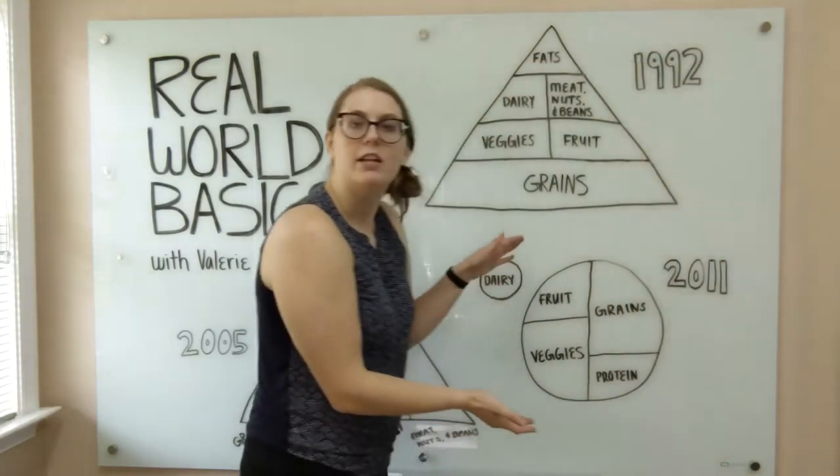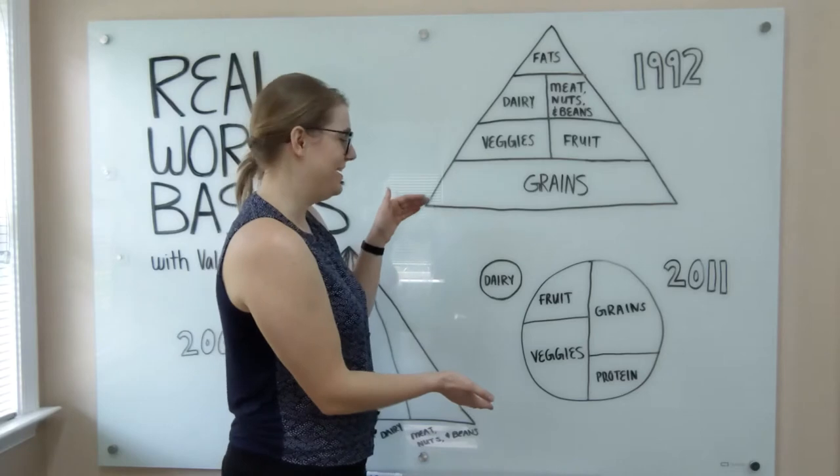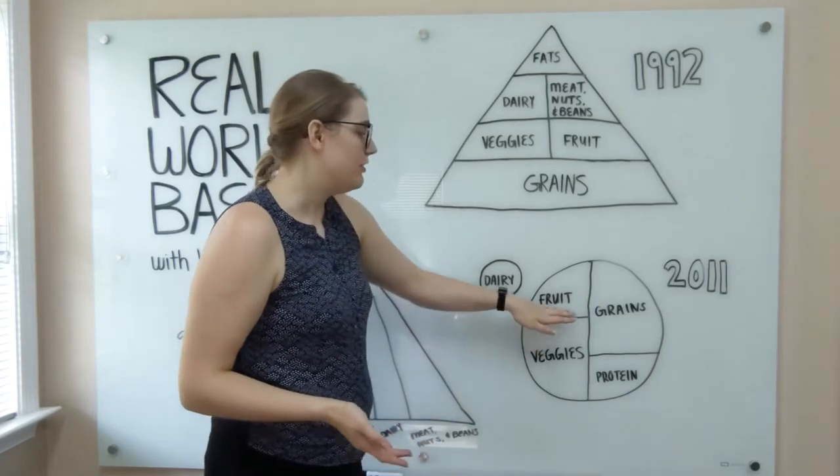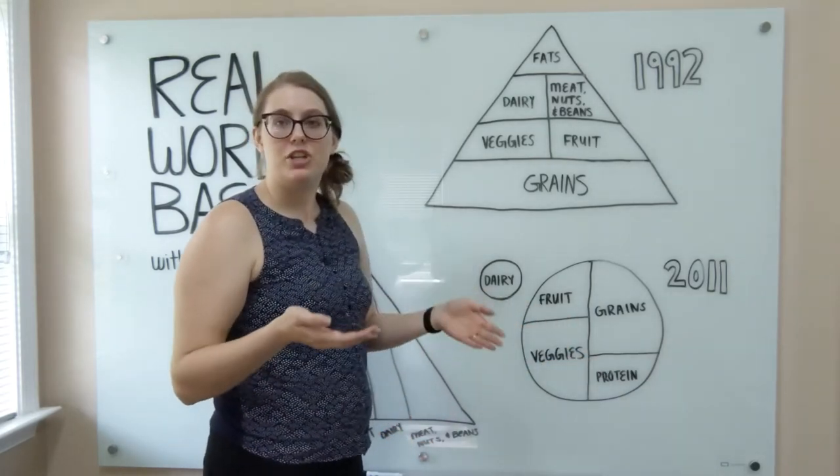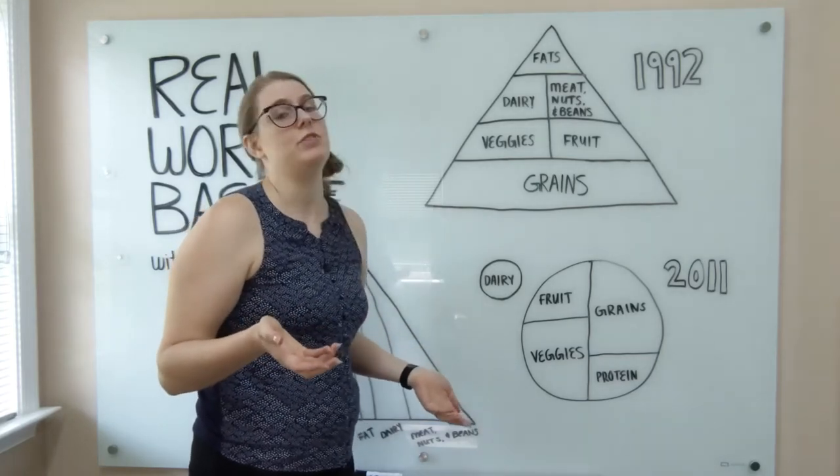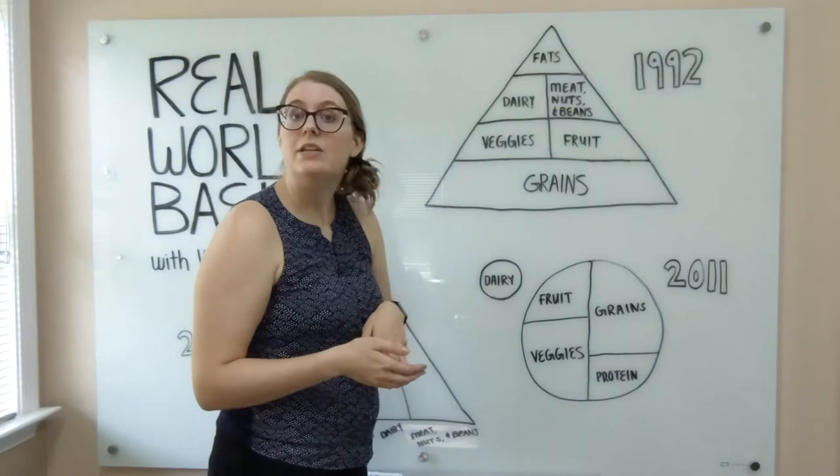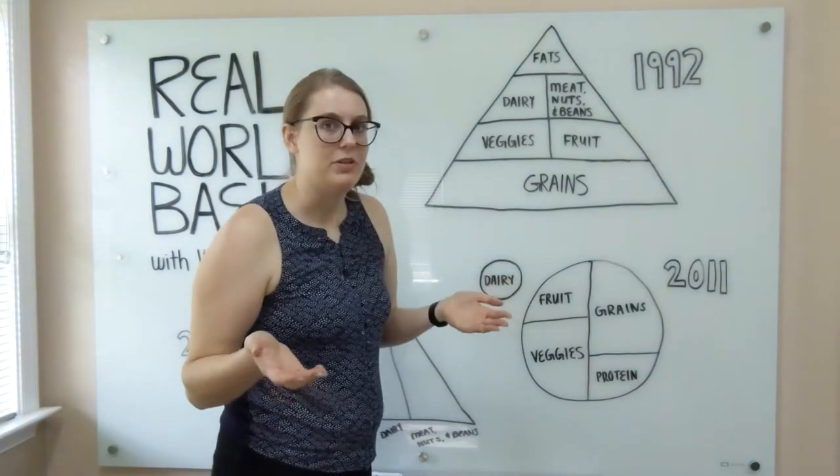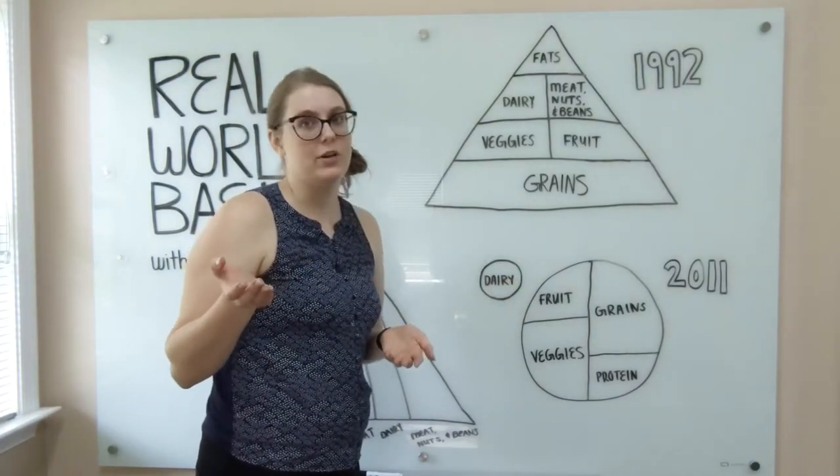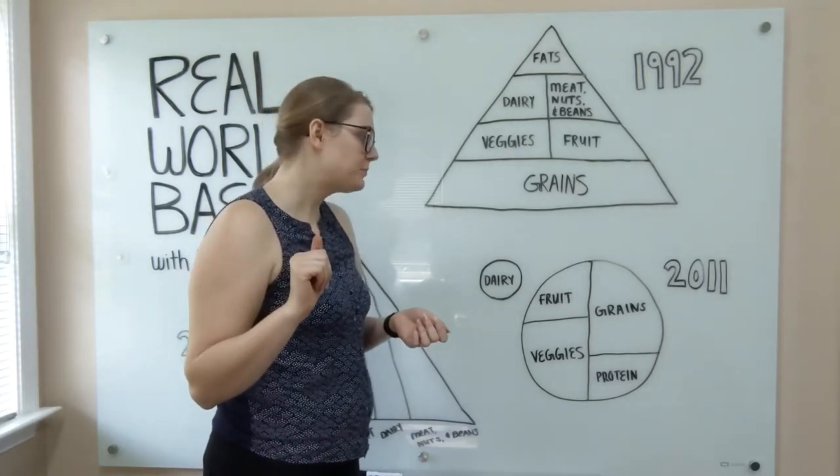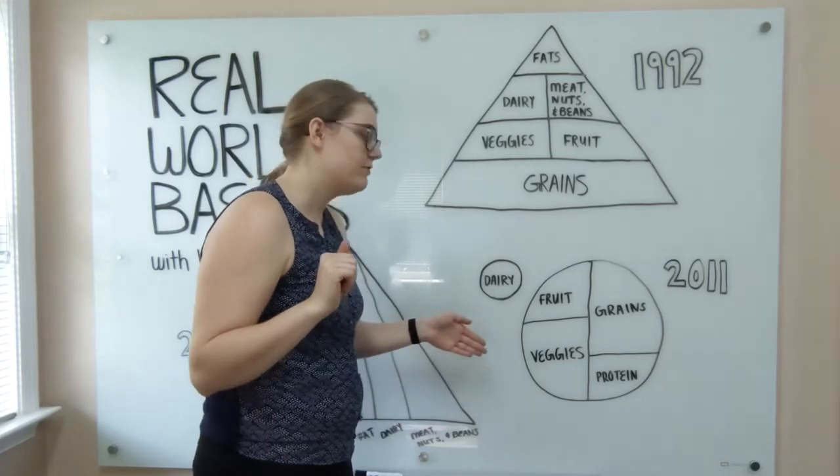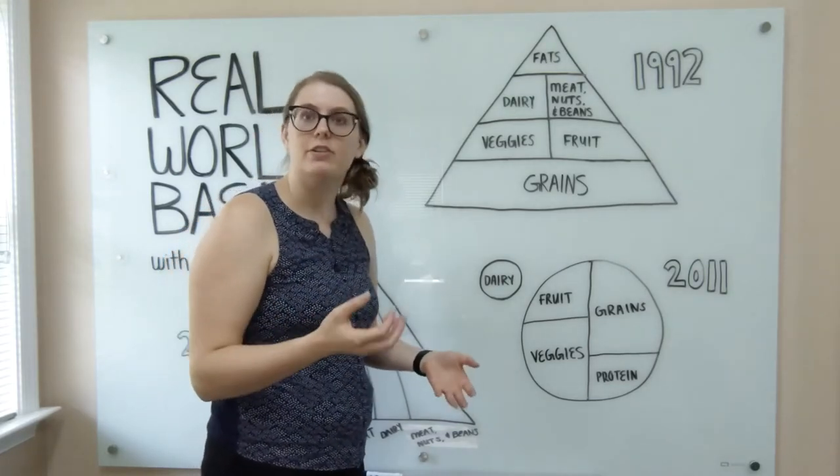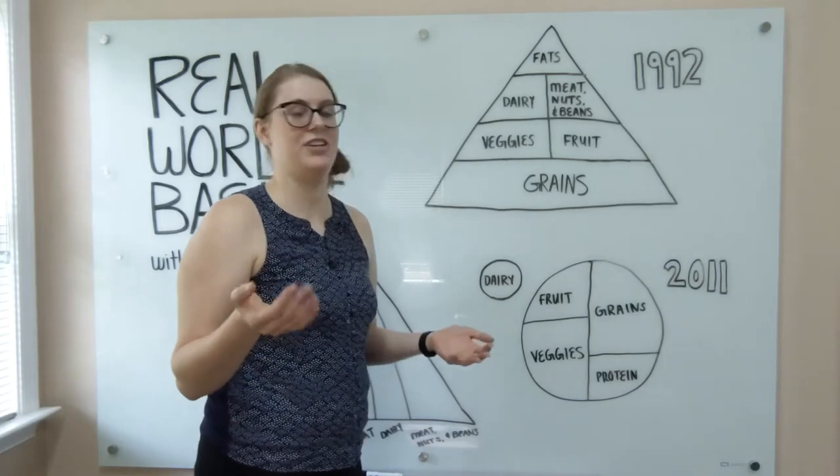And then in 2011, they changed it again and now it looks like a plate. Your veggies and grains still make up the biggest categories. And then they've got your fruit and protein. They changed it to protein because you can get your protein from a variety of different sources, not just meat, nuts and beans. And then you have your small portion of dairy. They did take out the category of fat because fat can be found in a lot of different food categories. But we'll get more into that a little bit later in the video. So this one just serves as a great reference for what you should aim for your plate to look like at each meal. And if you don't hit every single food category at every single meal, that's totally okay. But again, it is just a general guideline.